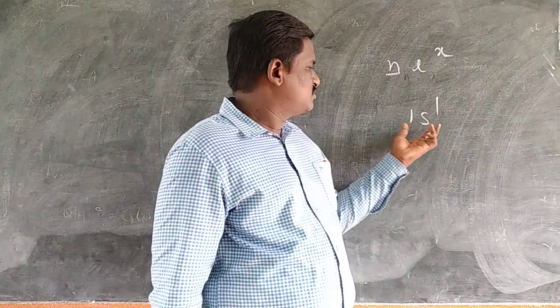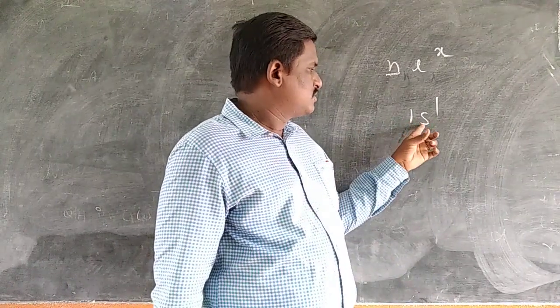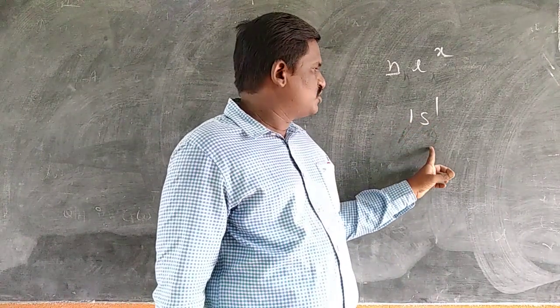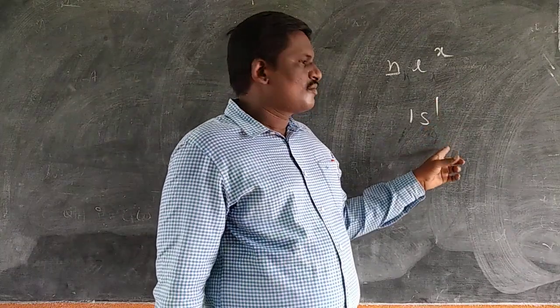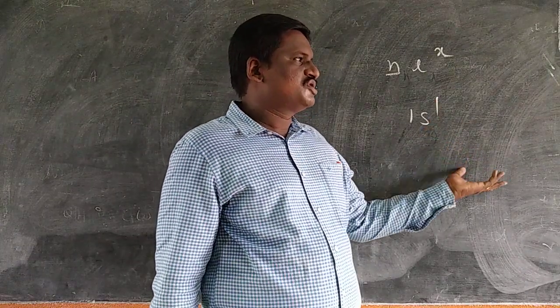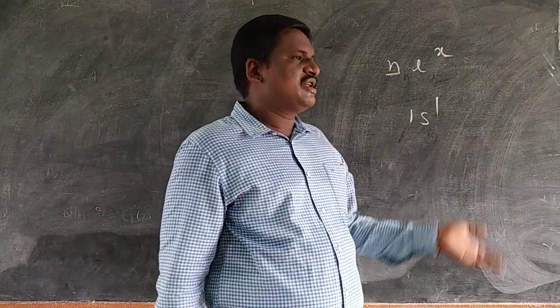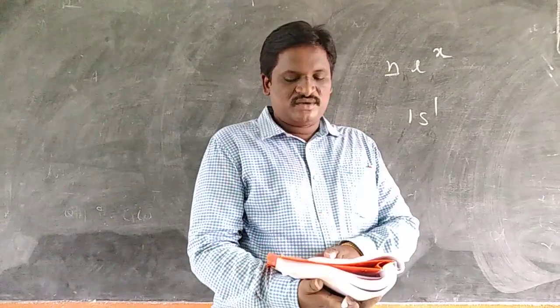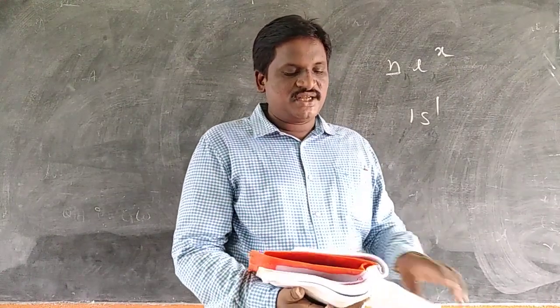For this orbital, N value is 1, that means L value is 0, ML value is also 0, and MS value is plus or minus one-half.